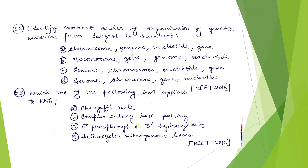The next question: identify the correct order of organization of genetic material from largest to smallest. The four levels are chromosome, genome, nucleotide, and gene. The largest is our genome, followed by chromosome, then gene, then nucleotide — because DNA is made up of nucleotides, genes are found in DNA, chromosomes are formed with many genes, and the genome is formed by all haploid sets of chromosomes. So the correct order from largest to smallest is genome, chromosome, gene, nucleotide — option D.